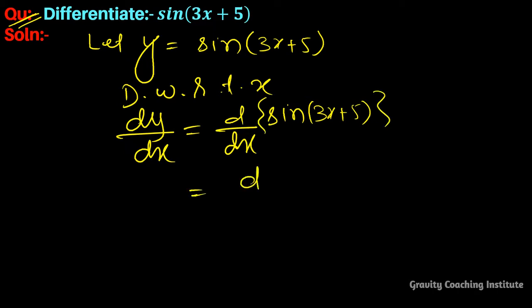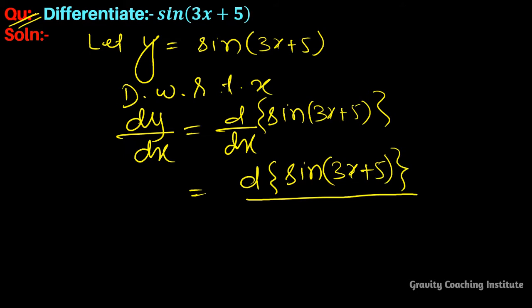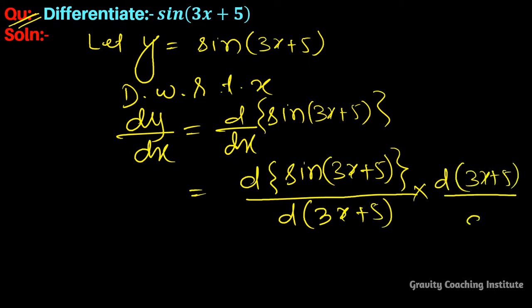Now we use the chain rule: d/dx of sin(3x + 5) equals d(sin(3x+5))/d(3x+5) into d(3x+5)/dx. We know that the differentiation of sin x equals cos x, so this gives cos(3x + 5).